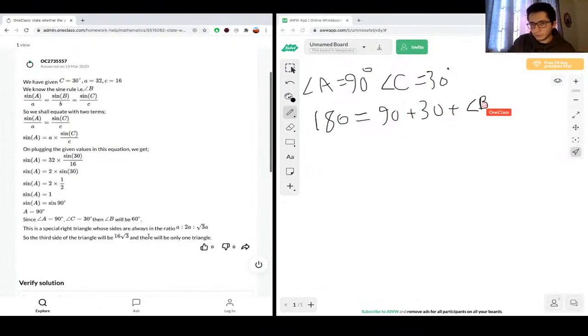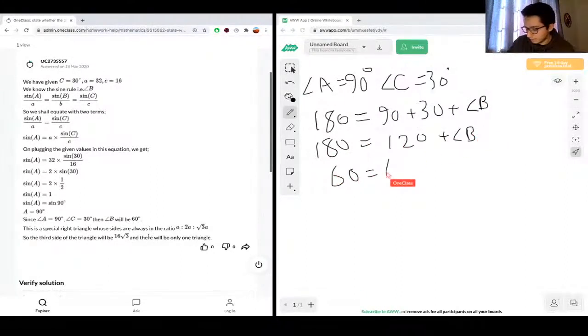So if we just solve for this, so 90 plus 30 is equal to 120, plus angle B, and then subtracting 120 from both sides of the equation, we get 60 equals to angle B. So this is the exact triangle that is the special triangle where the angles are 90, 30, and 60.